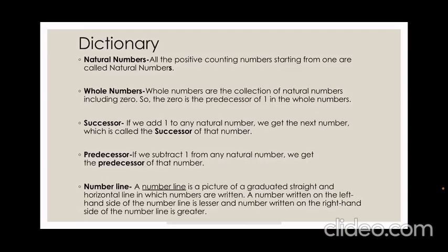Whole numbers - numbers are the collection of natural numbers including 0. So 0 is the predecessor of 1 in the whole numbers.